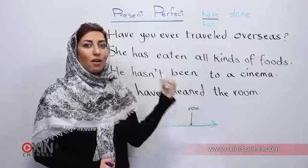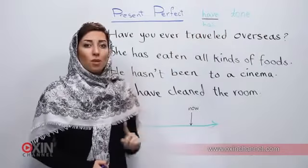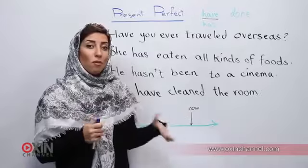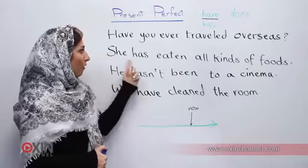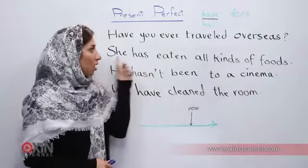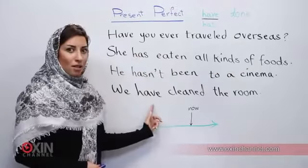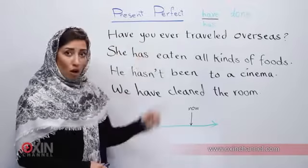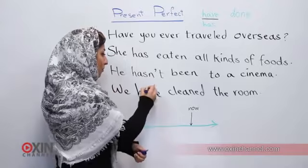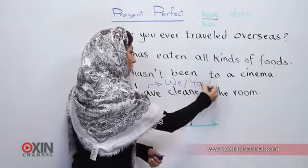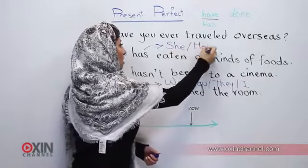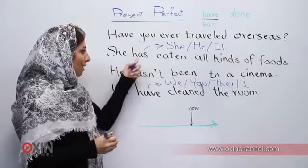It is formed using have or has plus past participle. The past participle is the third form of the verb — for example: do, did, done. That third form is called the past participle. For example: she has eaten all kinds of foods. After the subject, we always have either have or has. Have is used for we, you, I, and they. Has is used for she, he, and it.